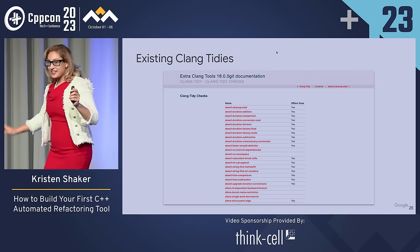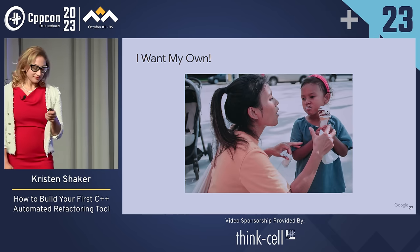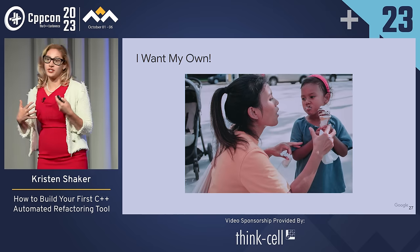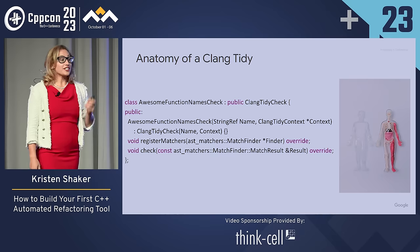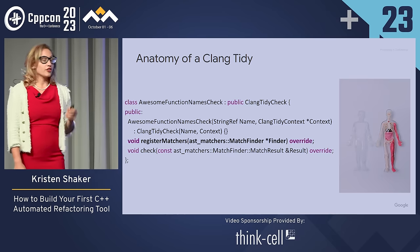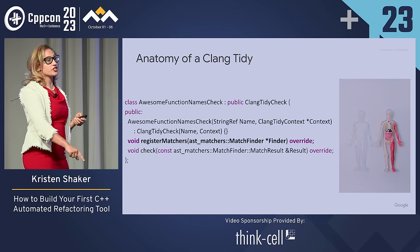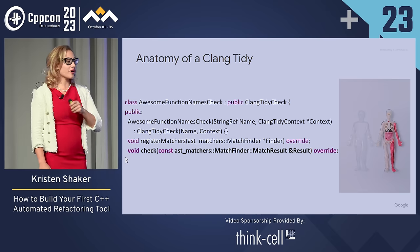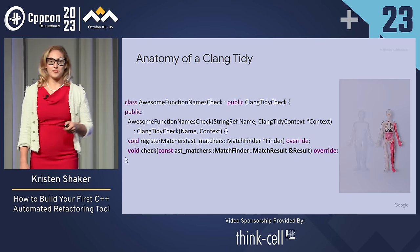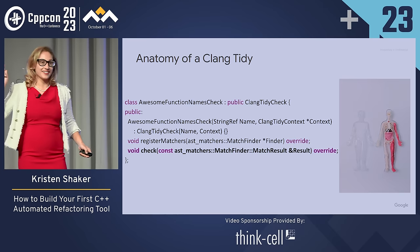There are a lot of existing Clang Tidies you can use, but you're special — or your company is special — and you want your own. Well, you are in the right place. The rest of this talk is going to discuss how you can write your own Clang Tidy check. There are two fundamental aspects to writing a Clang Tidy: the first is identifying the piece of code that you want to change, which happens in the RegisterMatchers API. The second part is actually refactoring the code you've identified, which happens in the Check API.